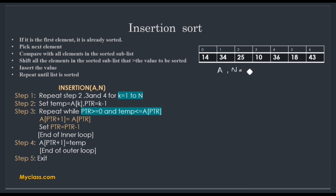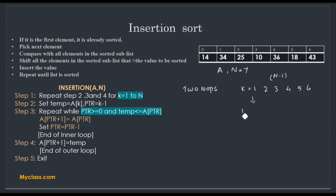In the algorithm, 'a' is the array name and 'n' is the total number of elements — in this example n = 7. There are two loops: an outer loop running from k = 1 to n−1 (6 times in this example), and an inner loop. In the outer loop we execute steps 2, 3, and 4. Step 2: pick an element from the unsorted sub-list — temp = a[k].